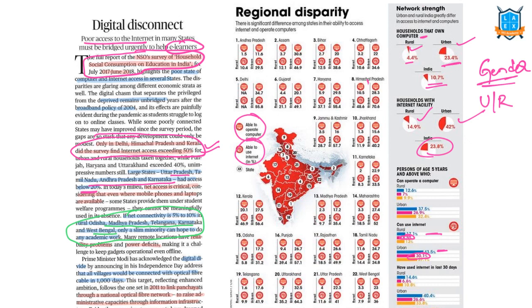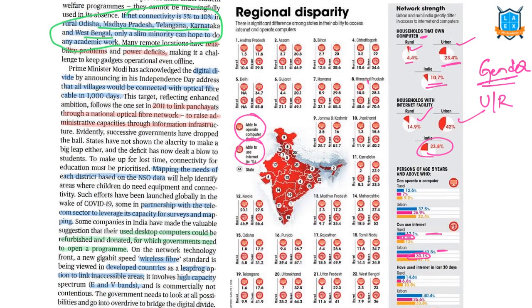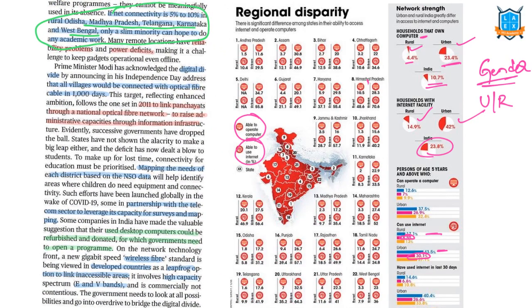Many state governments are sponsoring schemes issuing laptops and mobile connectivity devices for students to improve learning outcomes, but we are not able to provide access to basic internet services. Prime Minister Modi's Independence Day address mentioned connecting all villages with optical fiber cable in 1,000 days. Since 2011, we have initiated linking all panchayats with the National Optical Fiber Network, but despite initiatives like UNATI, e-Pathshala, Common Service Centers, and NOFN, we are not able to bridge this digital divide.